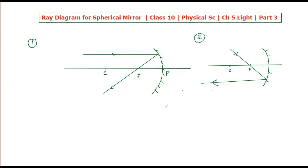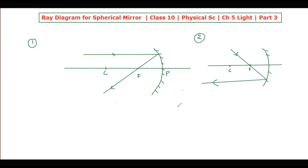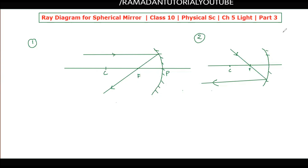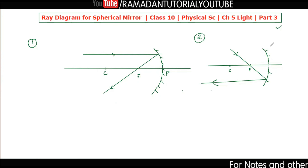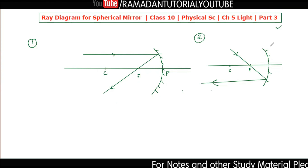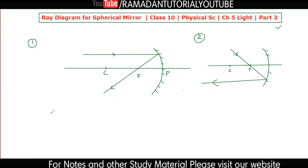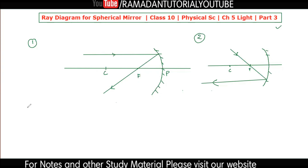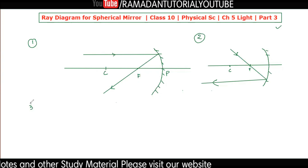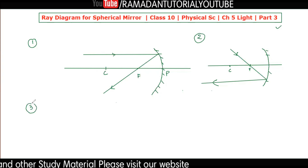In this class we will be using these four rays of light. In the next class, part four, which will be a longer video, we will discuss the different positions of objects and the image formation. The four rays discussed today will be used in that next class.